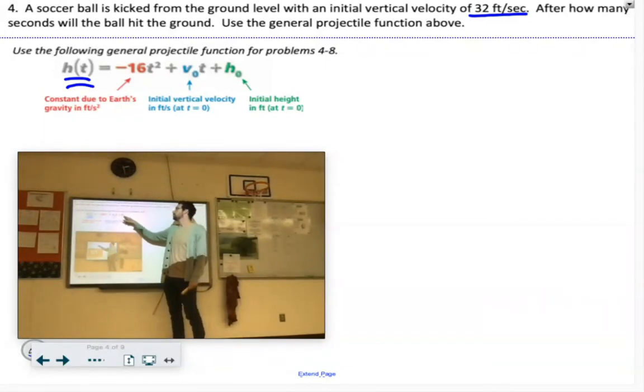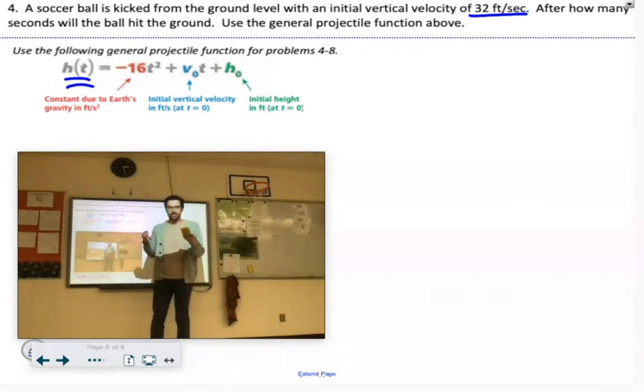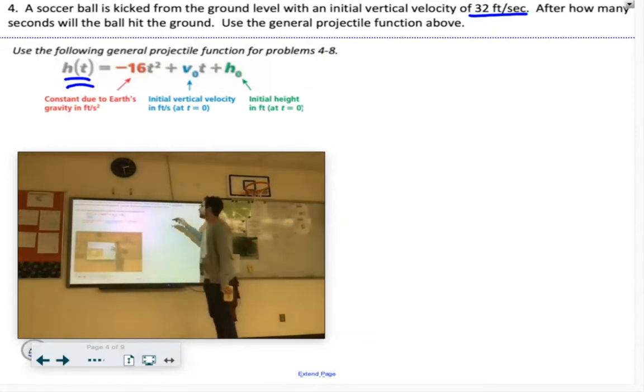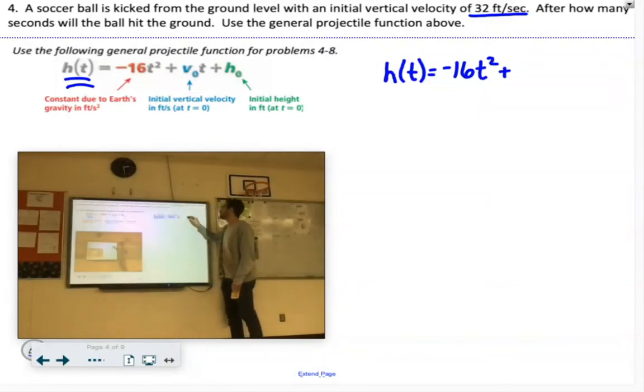And then plus h sub zero, which means the initial starting height. Now if we're kicking the ball from the ground, the starting height would be zero. It says the velocity is 32 feet per second. So let's fill in some stuff here. We've got h of t, the height after t seconds, equals negative 16 times t squared, plus our velocity is 32t, and then plus our starting height of zero.